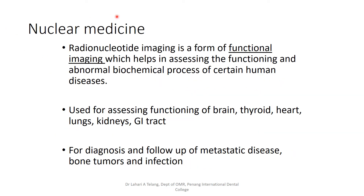Moving on to nuclear medicine: radionuclide imaging is a form of functional imaging that helps assess the functioning and abnormal biochemical processes of certain human diseases. It is basically used for assessing functioning of the brain, thyroid, heart, lungs, kidneys, and GI tract. It is also used for diagnosis and follow-up of metastatic diseases, bone tumors, and infection — most commonly in cancer patients, where disease progress and metastatic spread can be determined.